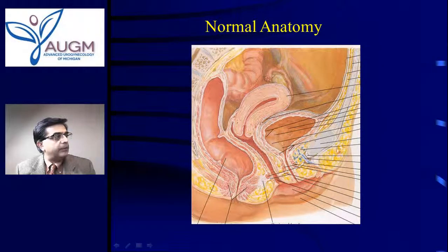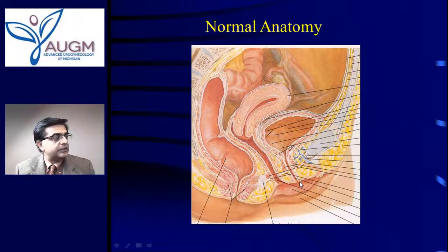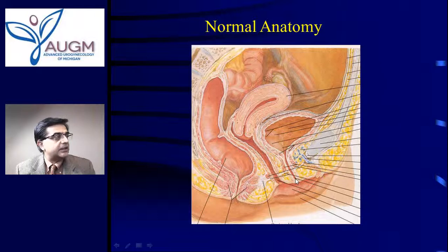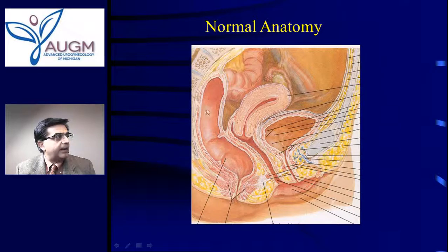The pubic bone is in the front, and the bladder is right here. The urethra is the tube that brings the urine to the outside, and the female urethra is just a short four-centimeter tube to the outside. Behind that is the vagina, the uterus on the top, and the rectum at the back.